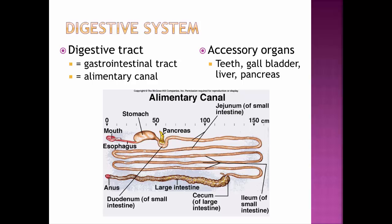The digestive tract is also called the gastrointestinal tract, GI tract, or alimentary canal. This is basically any of the tube-like organs that food is going to pass through. The parts include the mouth, esophagus, stomach, small intestine, large intestine, and anus. The pancreas, however, is not part of the digestive tract — it is an accessory organ. Accessory organs like the teeth, gallbladder, liver, and pancreas are essential to digestion but are not where food passes through a tube.